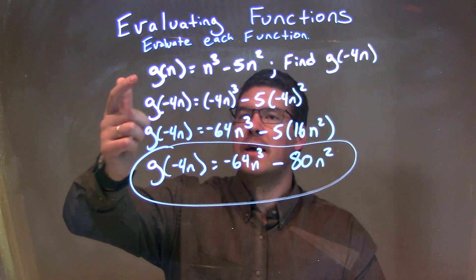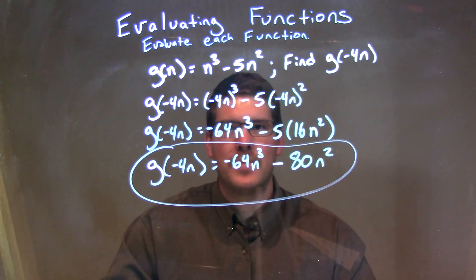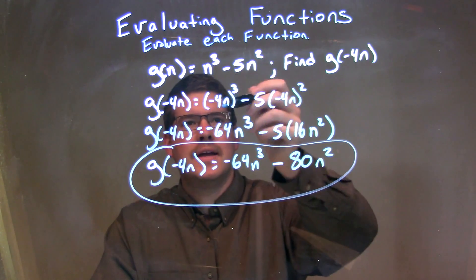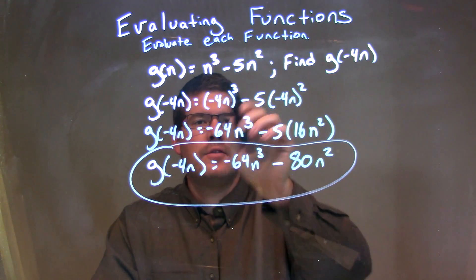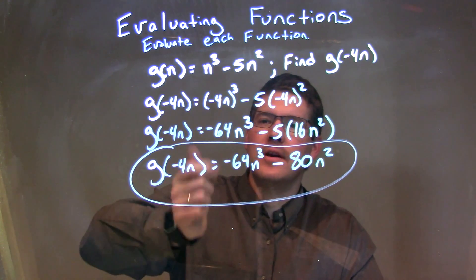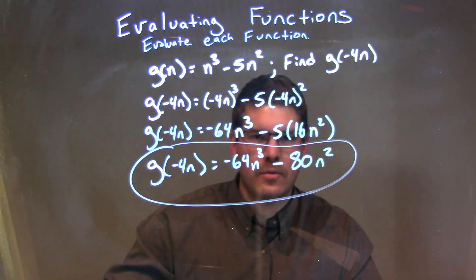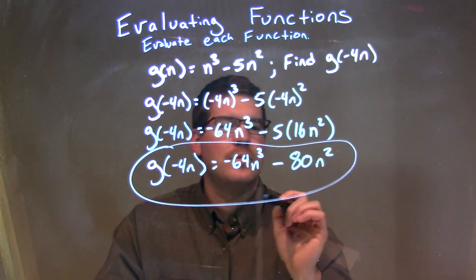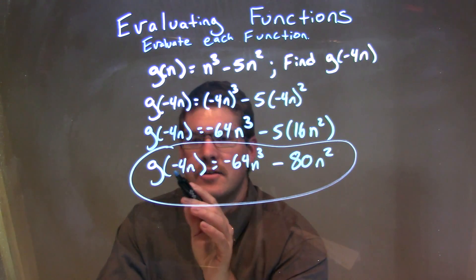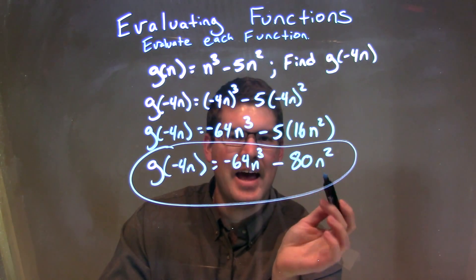Let's recap. We're given g of n is equal to n to the third minus 5n squared, and we need to find g of negative 4n. I plug in negative 4n for every single n value, giving us negative 4n to the third minus 5 times negative 4n squared. Simplifying: negative 4n to the third is negative 64n to the third, and negative 4n squared is positive 16n squared. We then multiply 5 times 16, which is 80, giving us minus 80n squared. So our final answer is g of negative 4n is equal to negative 64n to the third minus 80n squared.